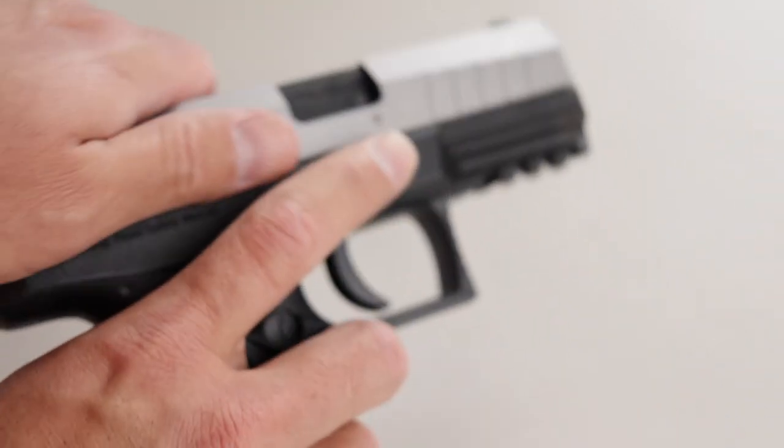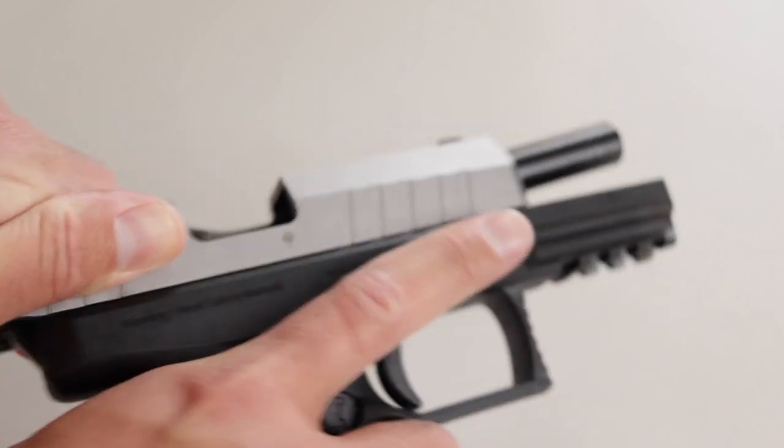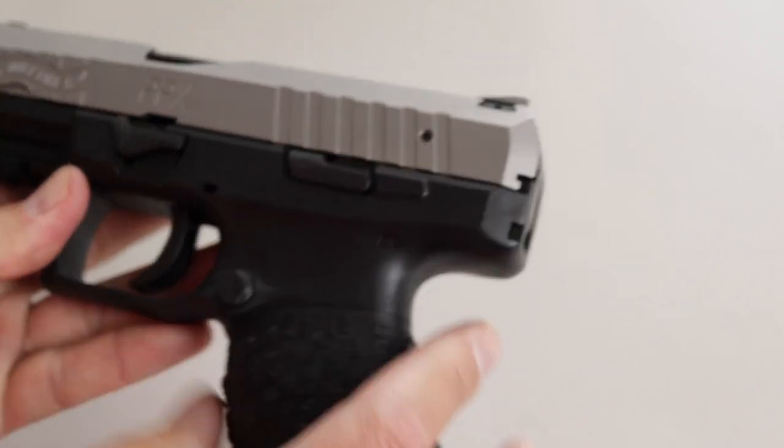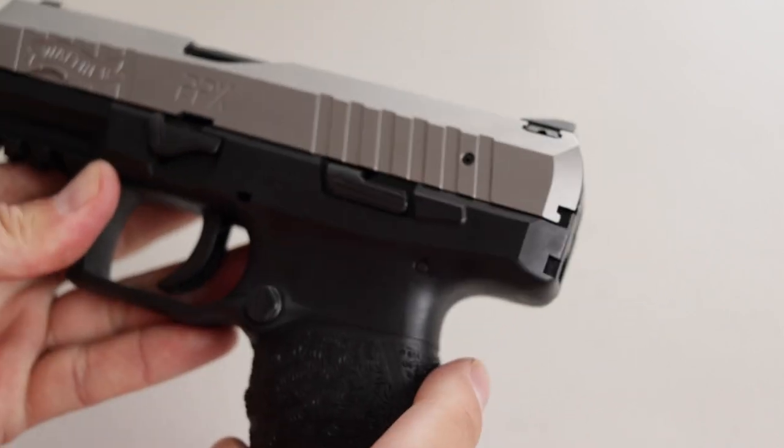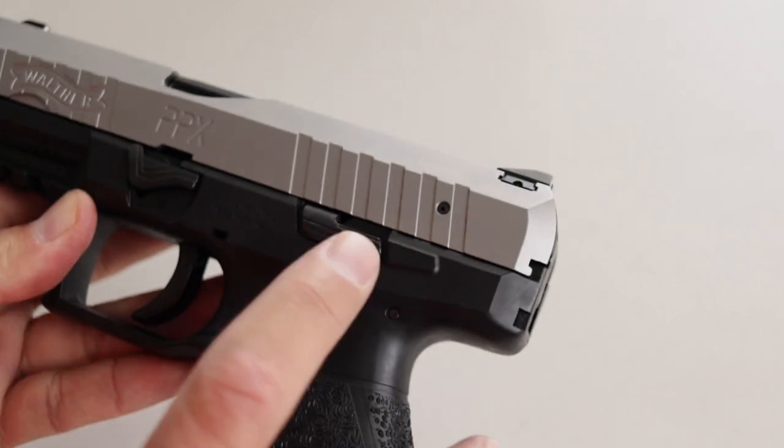Keep your finger outside the trigger guard and work the slide a few times. If there's any ammo inside, it's going to eject at this point. Because I took the magazine out, the slide's no longer going to lock back by itself. So to lock it back, pull the slide all the way to the rear, then push up on the slide stop lever.